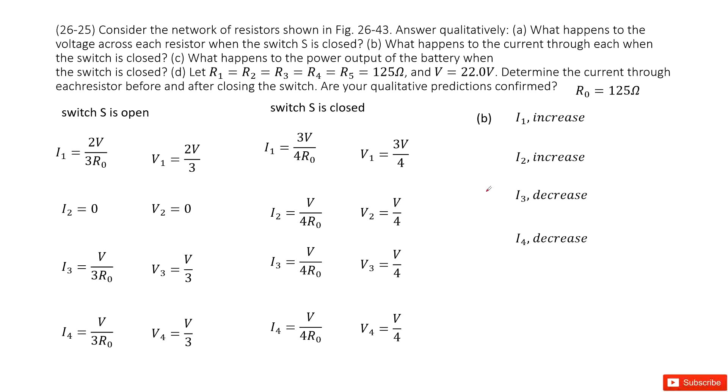Part B asks what happens to the current through each resistor when switch is closed. Initially I1 is 2V over 3R0. Finally it becomes 3V over 4R0. I1 is increased. I2 increased from 0 to V over 4R0. I3 decreased. I4 decreased.